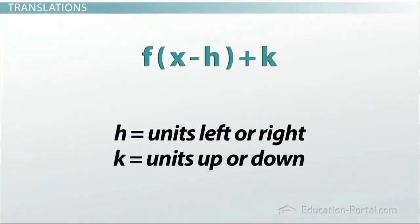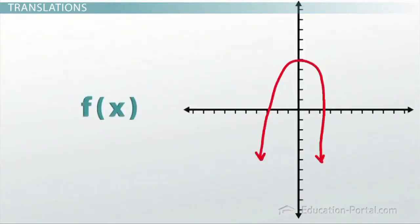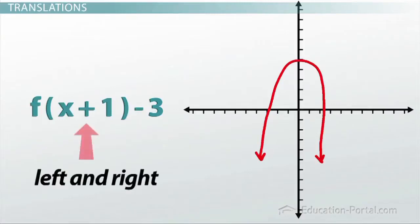Let's look at a few quick examples. How about this one? Given that this graph is f of x, graph f of x plus one minus three. Okay, while the stuff inside the f of x shifts the function left and right and does the opposite of what I'd expect it to,